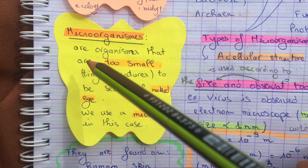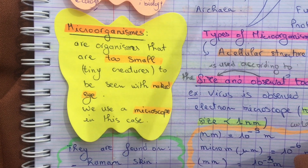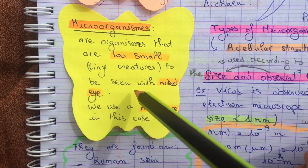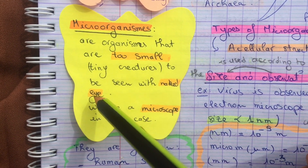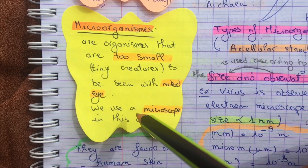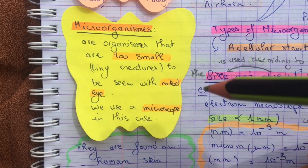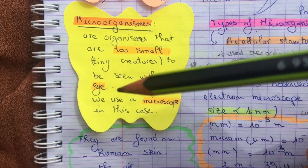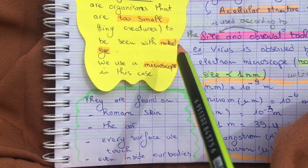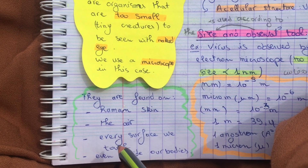Micro-organisms are organisms that are too small — tiny creatures — to be seen with the naked eye. We use a microscope in this case. They are found on human skin, in the air, and on every surface we touch.